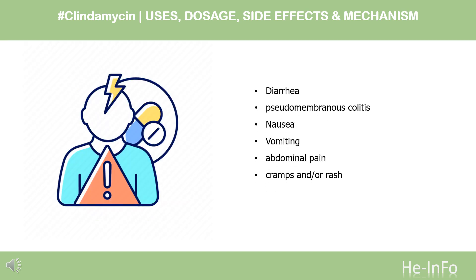Common adverse drug reactions associated with systemic clindamycin therapy, found in over 1% of people, include diarrhea, pseudomembranous colitis, nausea, vomiting, abdominal pain or cramps, and rash. High doses, both intravenous and oral, may cause a metallic taste.